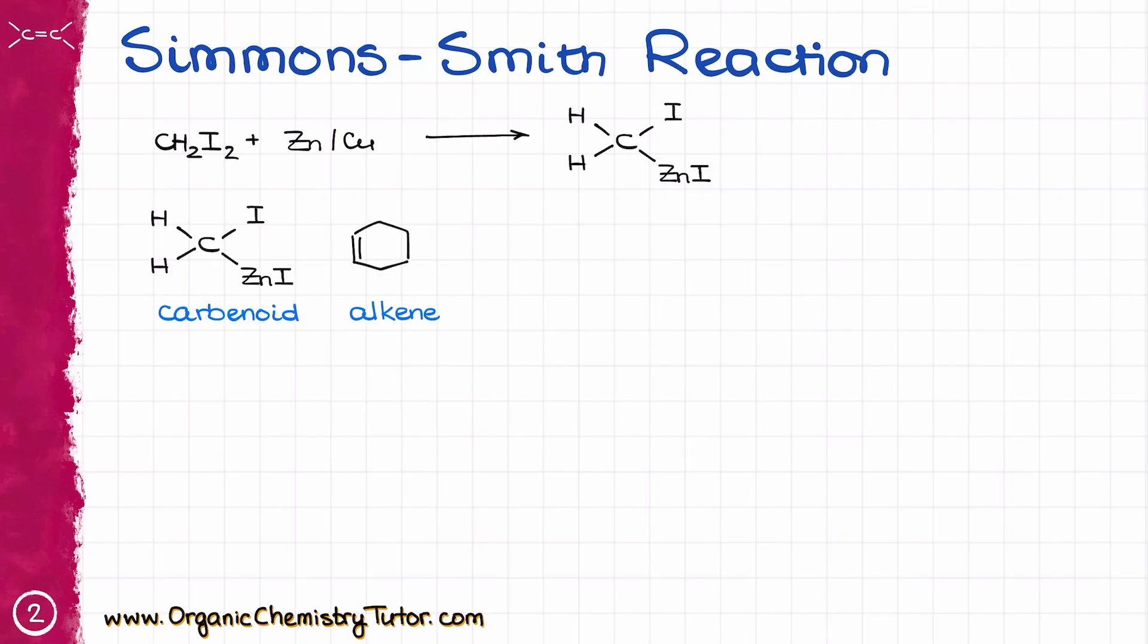Next, we are going to react this new carbenoid species with an alkene. This reaction has a concerted mechanism, which will make two new bonds between the CH2 of the carbenoid and each atom of the alkene species, giving me a cyclopropane product right away and zinc iodide as our inorganic coproduct, which we don't really care about, so I'm not even going to show it in the future examples.